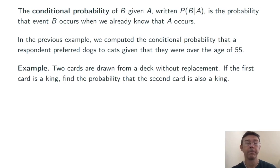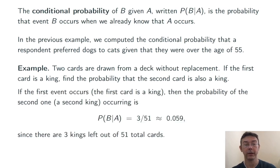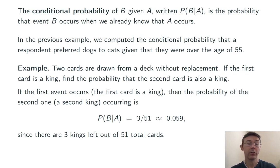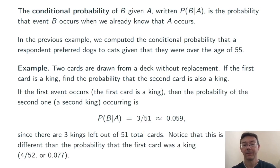Here's another example of conditional probability. Two cards are drawn from a deck without replacement — one card is drawn, we look at it, set it aside, and then draw another. If the first card is a king, find the probability that the second card is also a king. Event A is that the first card drawn is a king, and event B is that the second card is a king. If A occurs, we've drawn a king, so we now have 51 cards left, of which 3 are kings. The probability of the second one being a king is 3 in 51, about .059. Notice this is different from the probability that the first card was a king, which would be 4 in 52, or .077.